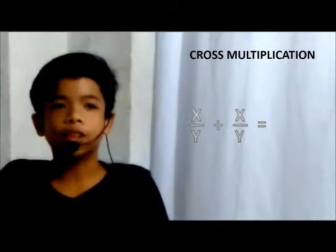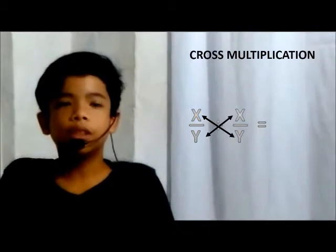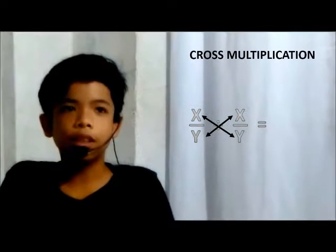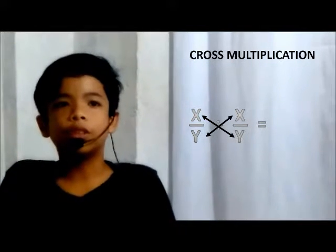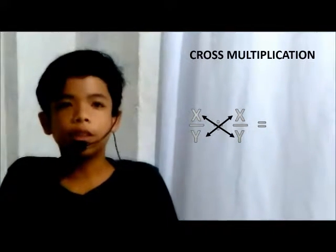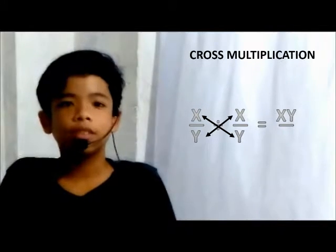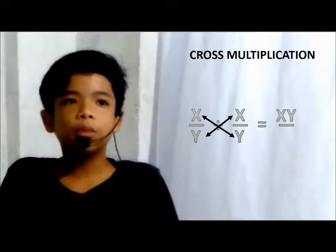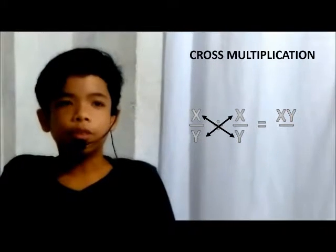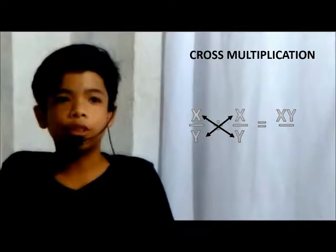The other method is cross multiplication, where we put an imaginary X between two fractions and multiply the numerator of the dividend to the denominator of the divisor — the product of this will be the numerator of the answer. Then multiply the denominator of the dividend to the numerator of the divisor — the product will be the denominator of the answer.